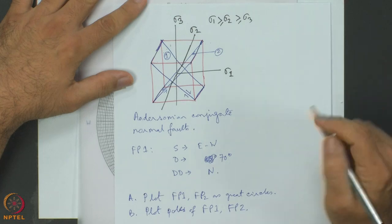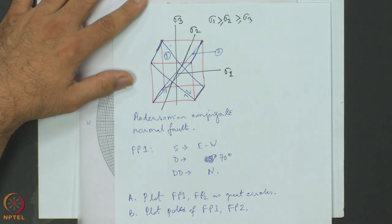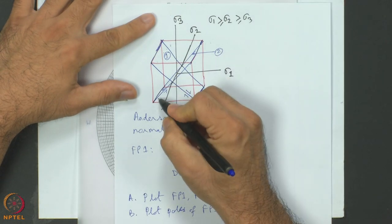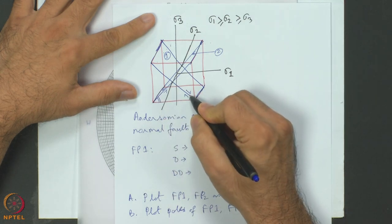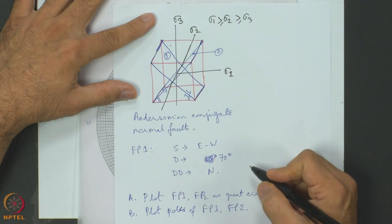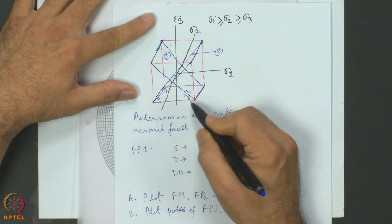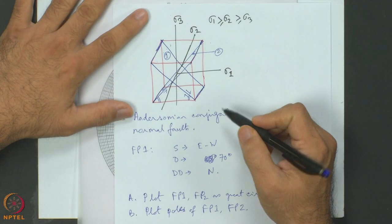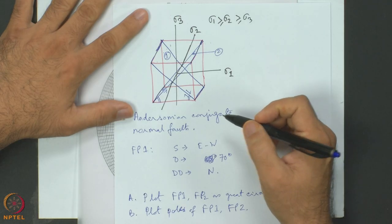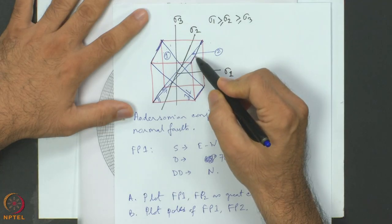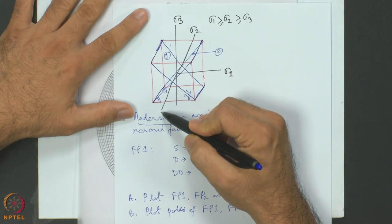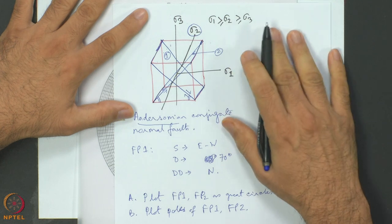Andersonian conjugate normal faults can be represented inside a cuboid. In my diagram, the blue diagonals indicate fault plane 1 and fault plane 2, and they are at a steep dip with the horizontal plane. In the case of Andersonian conjugate normal faults, this angle can be within 60 to 70 degrees. The intersection between the two conjugate normal faults is a horizontal straight line, and that itself is the sigma 2 principal stress axis.